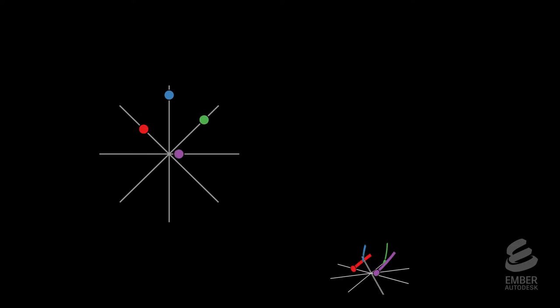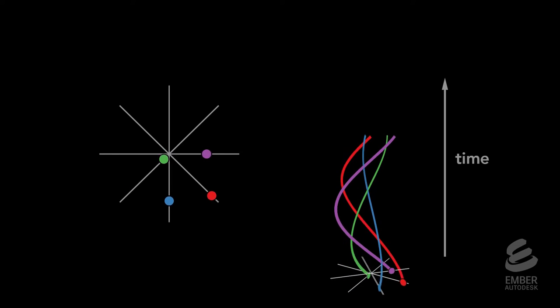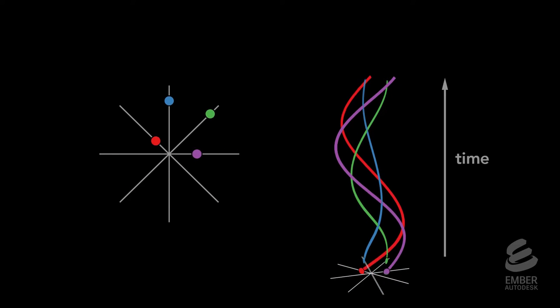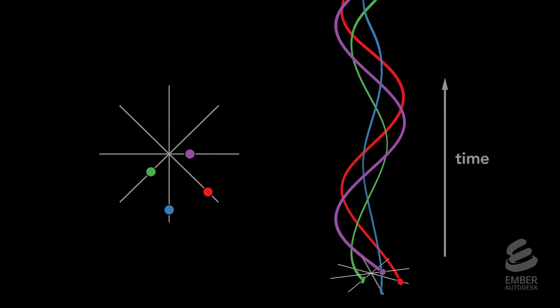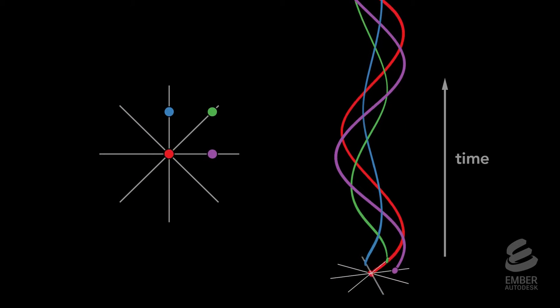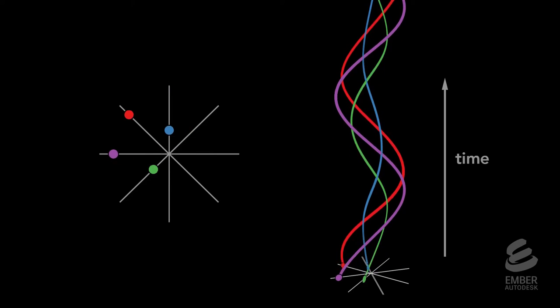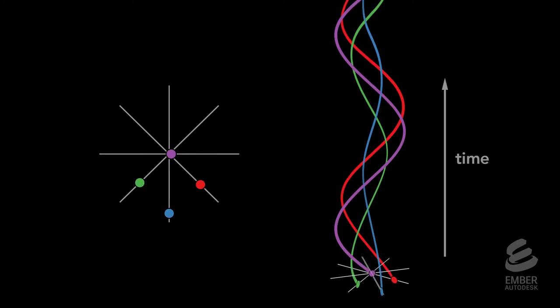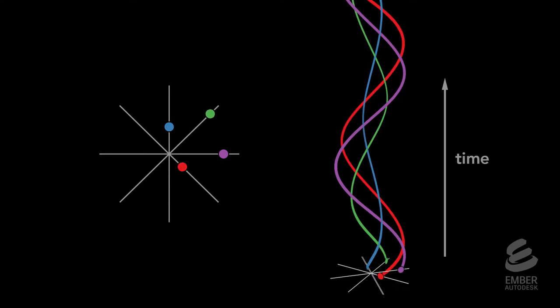If we draw this into three dimensions, converting time into space, we get this 3D model. Each dot moving back and forth in time forms a sine wave in space.